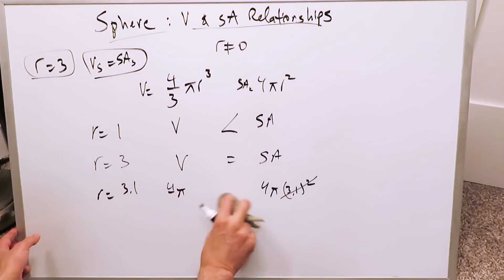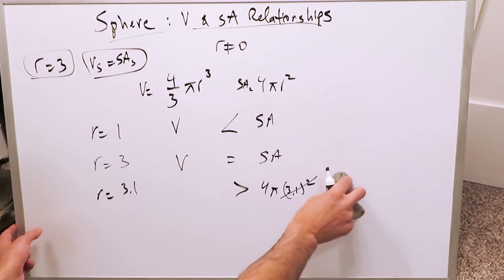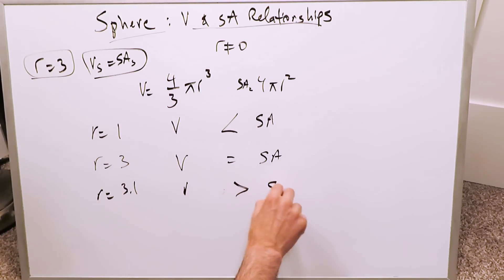So you're really looking at 4π times some value which is 1 point something. And this right here obviously would be larger than that. What is that telling you? Here in this specific instance, the volume is larger than surface area, and that relationship has been determined.